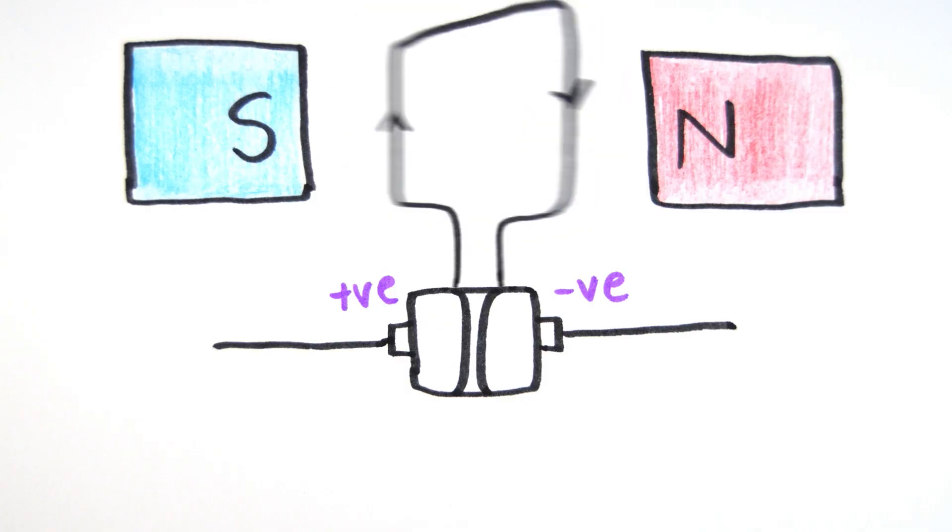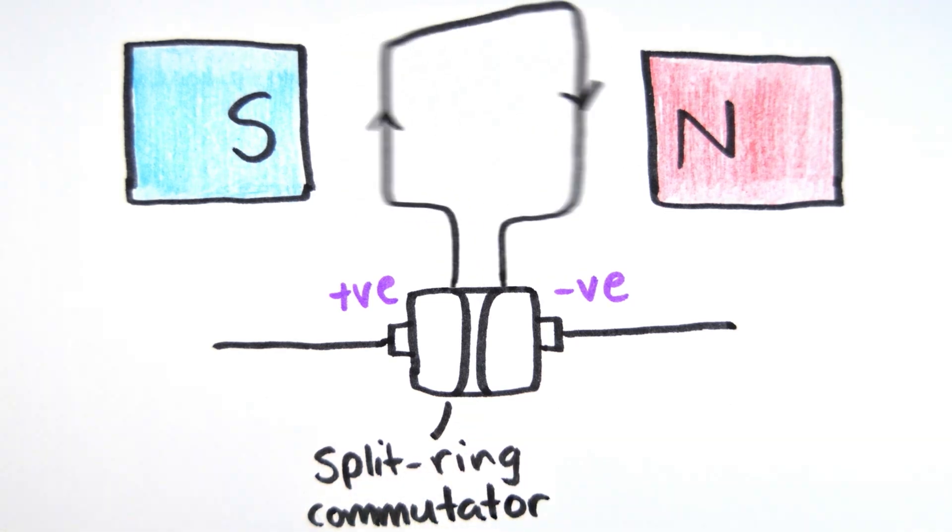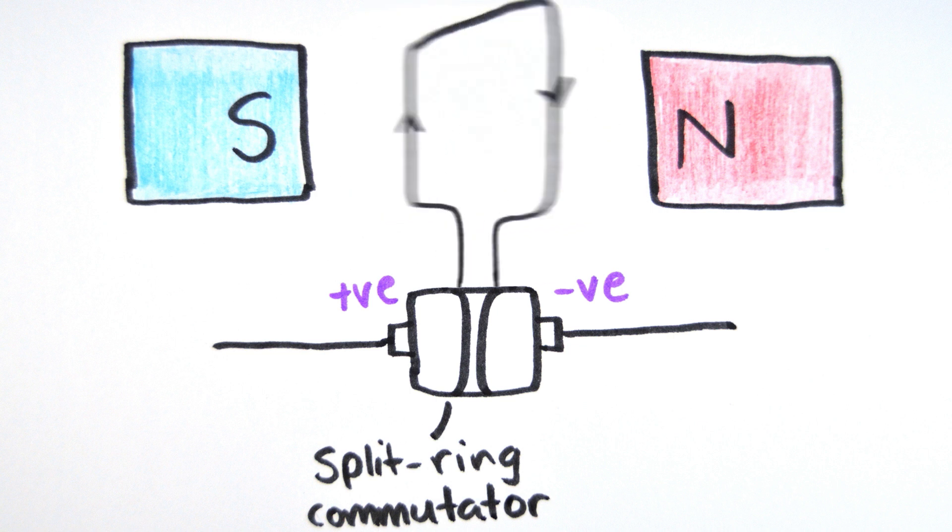It is attached to something called a split ring commutator, which is a clever way of swapping the contacts every half turn to keep it moving in the same direction.